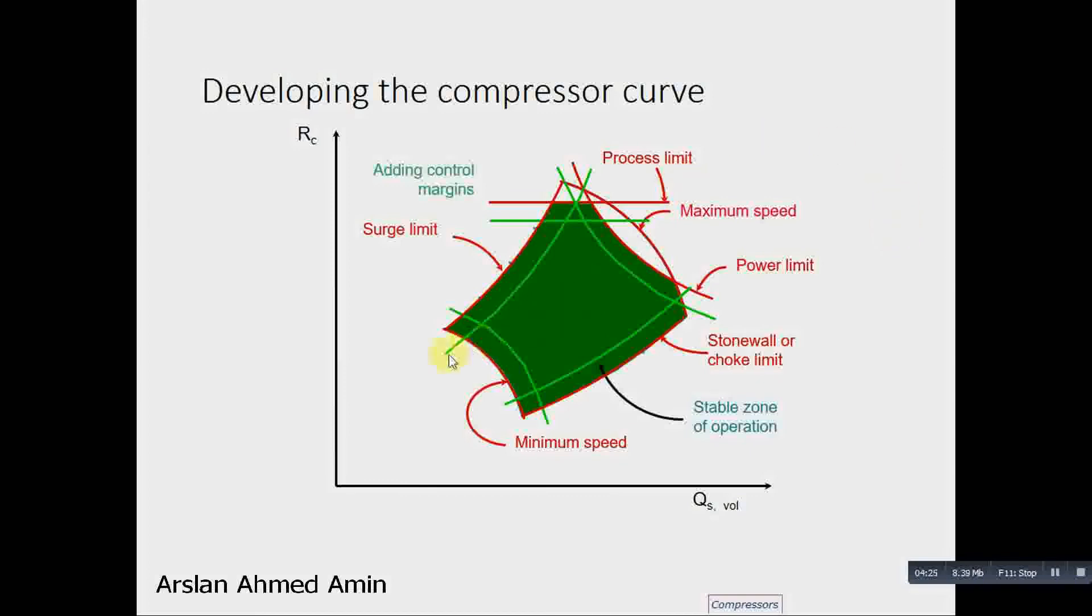We further add margins for our stability of the compressors. We will see that we have added margins. We can say that the margin is 10%. Usually a 10% standard margin is used. So we want the compressor to operate in this region. This is a further safer region.